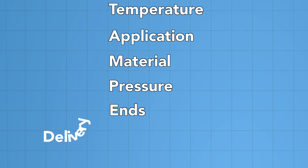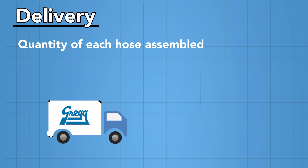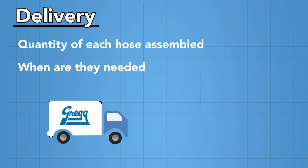D is for delivery. This is the quantity of each hose assembly and when they are required.